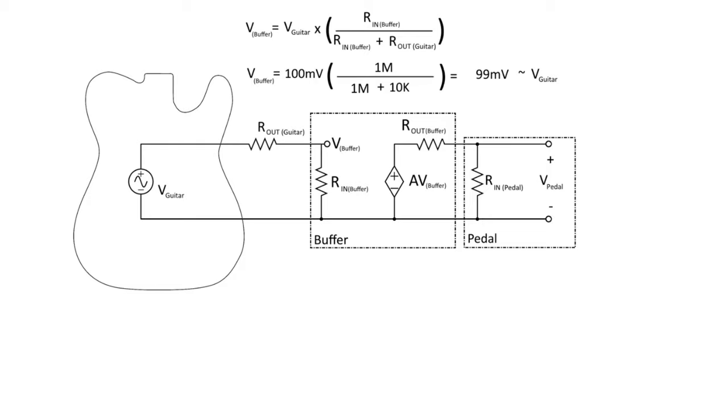Now we need to take that a step further and then see what the pedal sees. So let's take this equation out and this equation out. And we'll say now that the pedal sees A, which is 1, times the voltage of the buffer, times the input resistance of the pedal over the sum of the input resistance of the pedal and the output resistance of the buffer. Now, if we remember again, our A is equal to 1, so we'll carry that 99 millivolts over from the V_buffer from the previous equation.